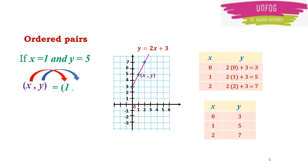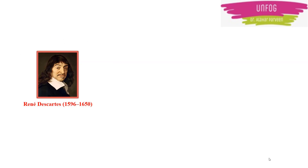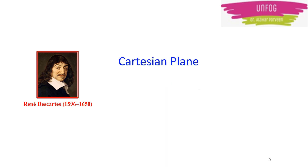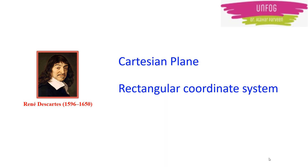That means you have to follow the order properly. In case you have y comma x — that is y is first and x is next — then you write the value of y first, then x. In this case it would be 5 comma 1. These pairs are therefore known as ordered pairs because you are following the order. This coordinate system is named after the French mathematician René Descartes, and it is often called the Cartesian plane or sometimes the rectangular coordinate system.